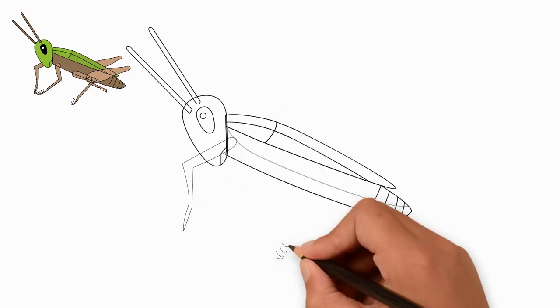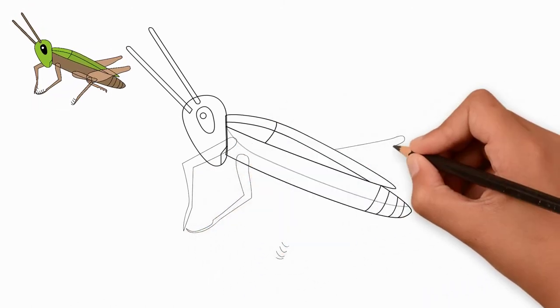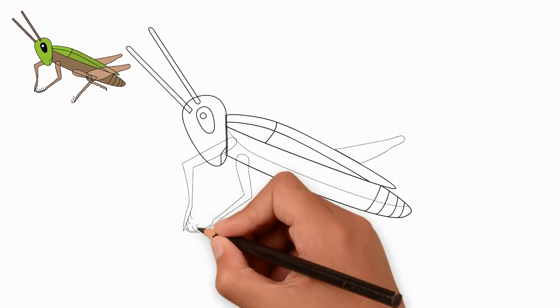Let's draw wings. The upper part of the wing is short and the lower part of the wing is long. We draw the wings in great detail.